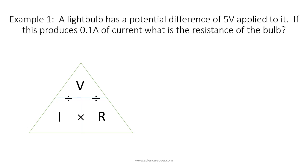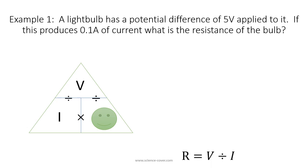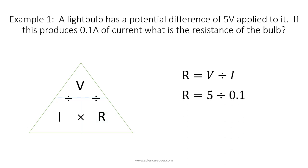Let's use an example. A lightsaber has a potential difference of 5 volts applied to it. If this produces 0.1 amps of current, what is the resistance? Resistance is calculated by taking the voltage and dividing it by the current: R = V / I. V is 5 volts and I is 0.1 amps, so 5 divided by 0.1 is 50. The resistance is 50 ohms.